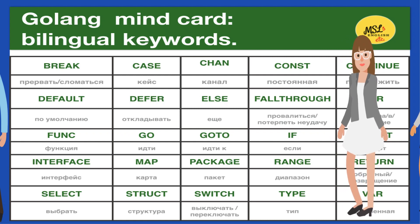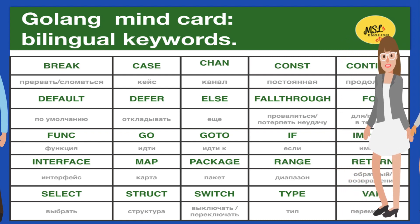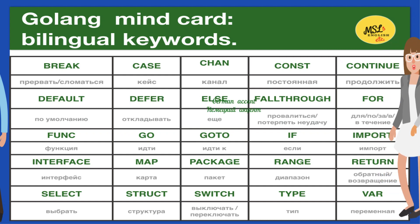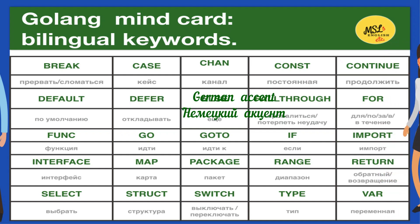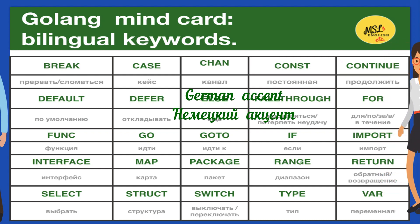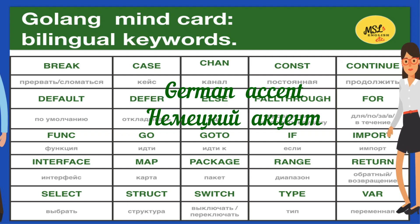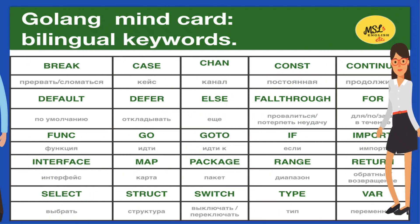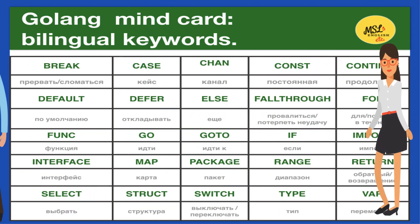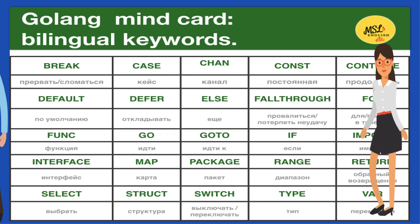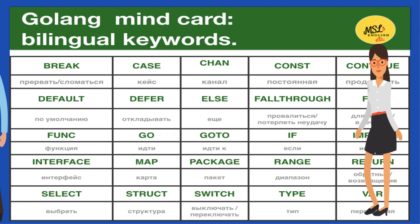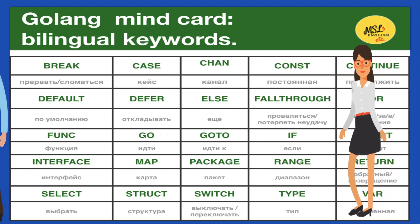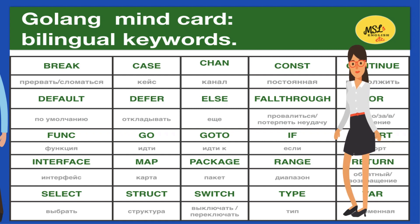Hello. I'm Helen from Germany. Break. Case. Chan. Constant. Continue. Default. Defer. Else. Fallthrough. For. Func. Go. Goto. If. Import. Interface. Map. Package. Range. Return. Select. Struct. Switch. Type. Var.